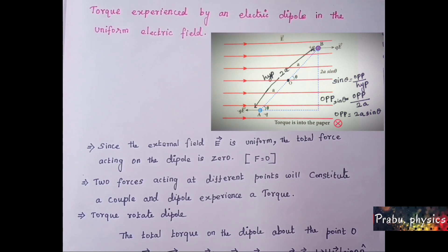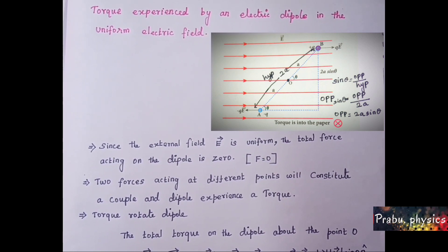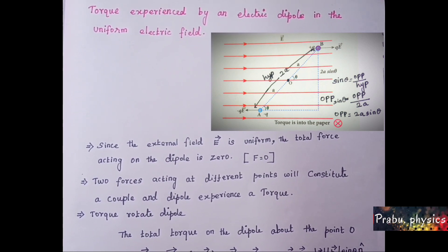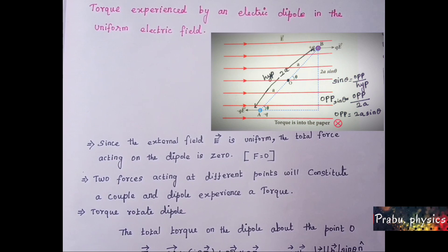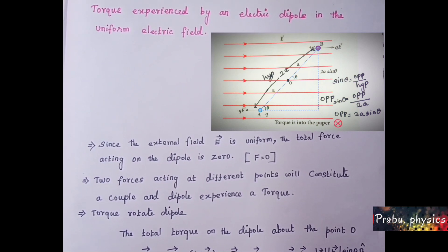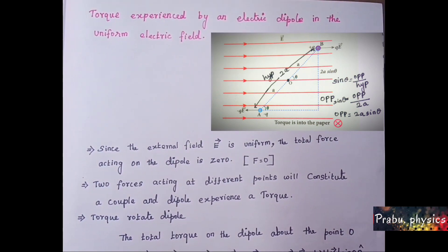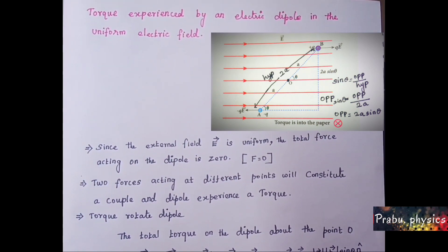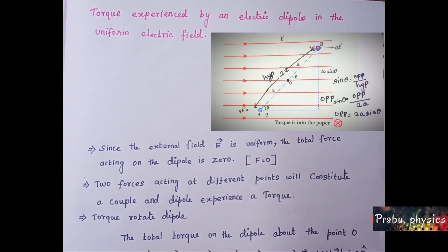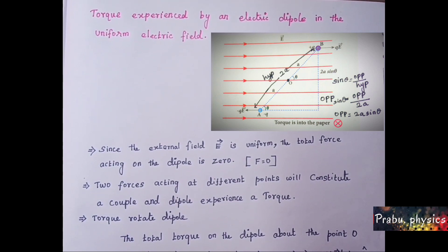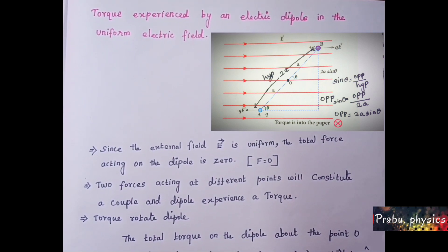Since the external field is uniform, the total force acting on the dipole is zero: F equal to 0.